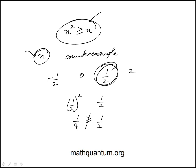So this is a counterexample. Looking at other cases: two squared does indeed satisfy the inequality. Zero squared equals zero, so they're equal, which also satisfies it.